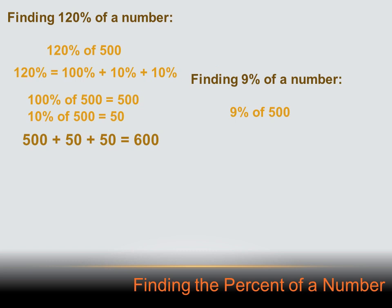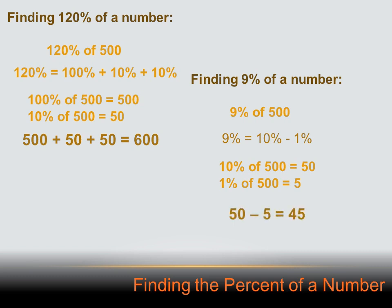How about finding 9% of a number? It's hard to work with 9%, but 10% of a number is easy. Could we change 9% to 10%? Let's find 9% of 500. Well, 9% equals 10% minus 1%. 10% of 500 is 50, and 1% of 500 is 5. So 9% of 500 would be 10% of 500 (which is 50) minus 1% of 500 (which is 5): 50 minus 5 equals 45.